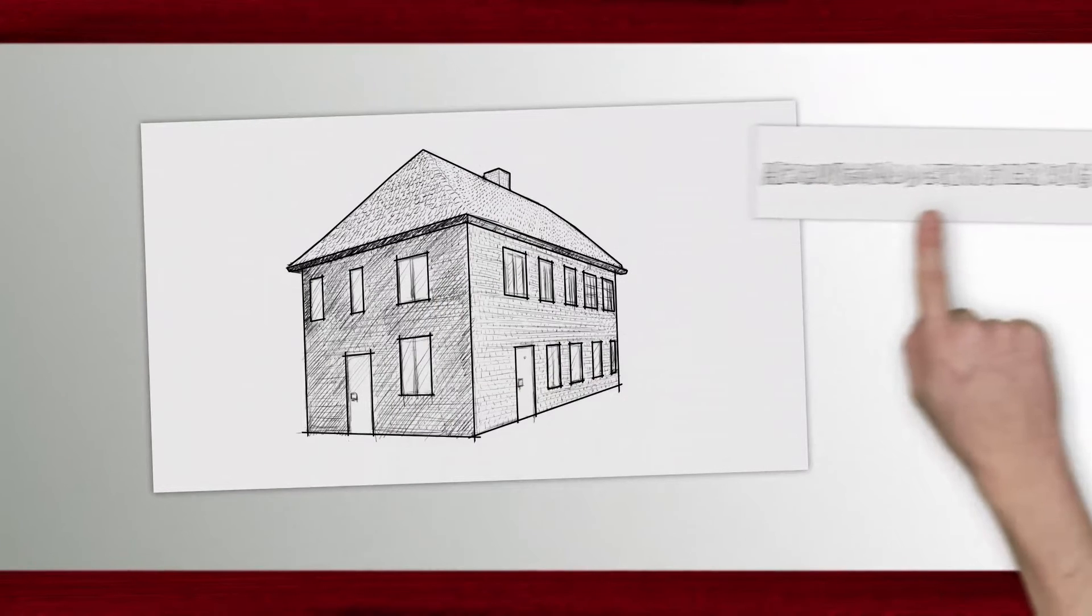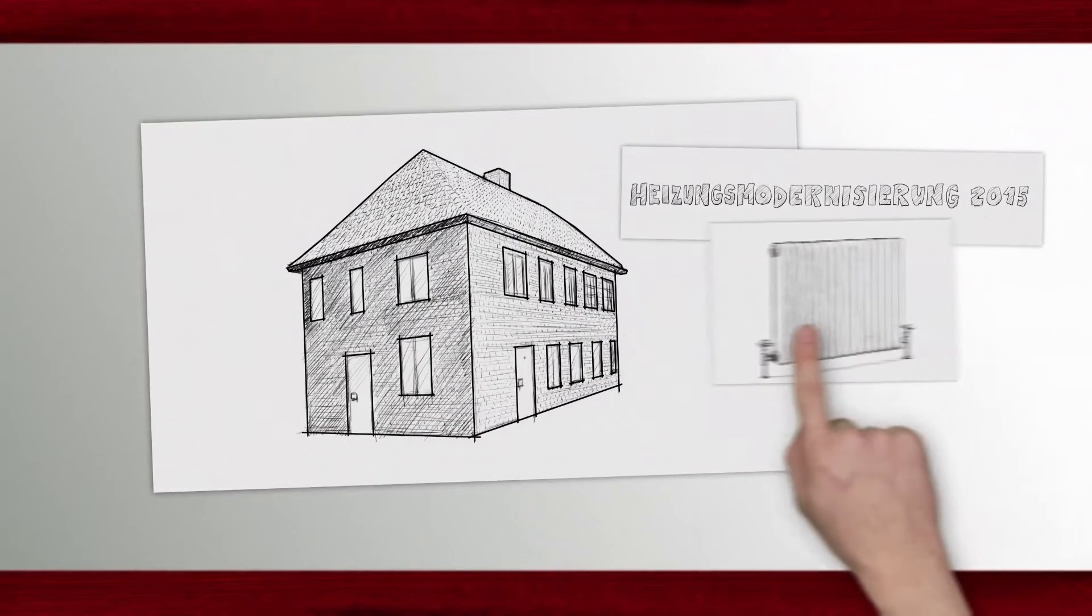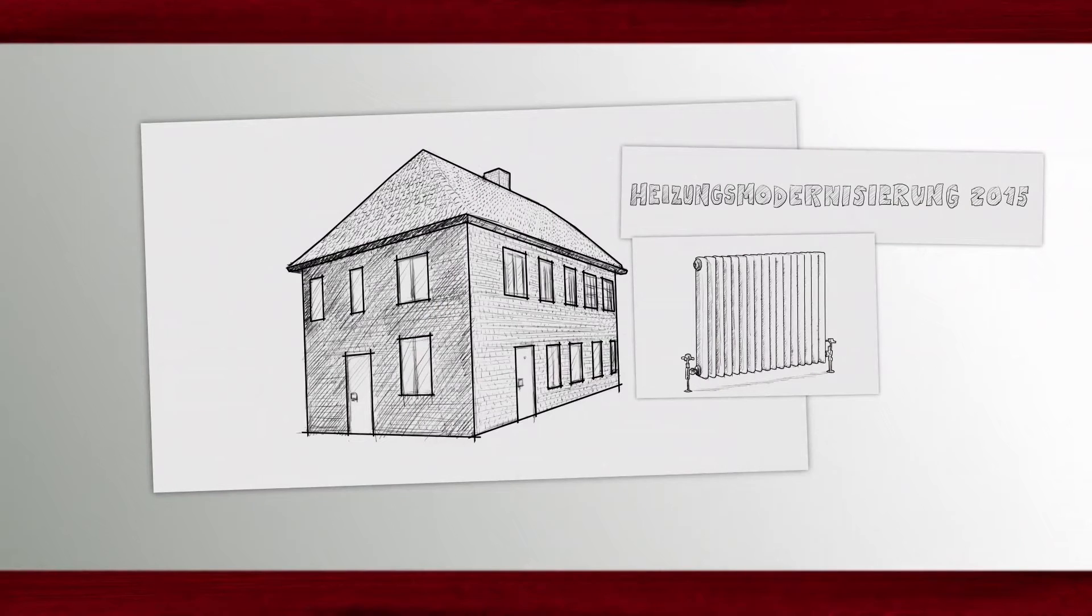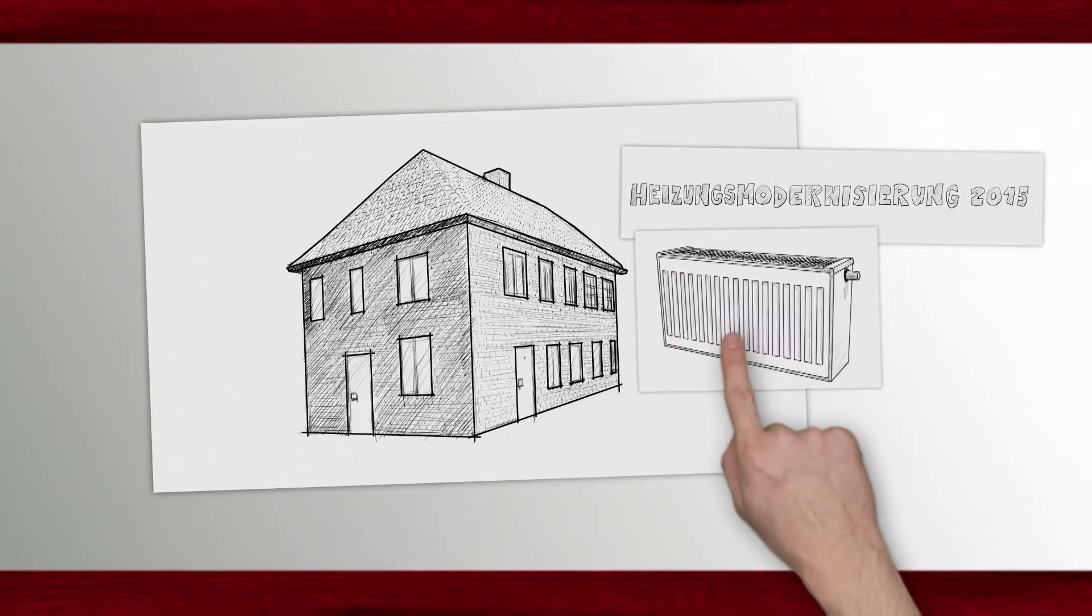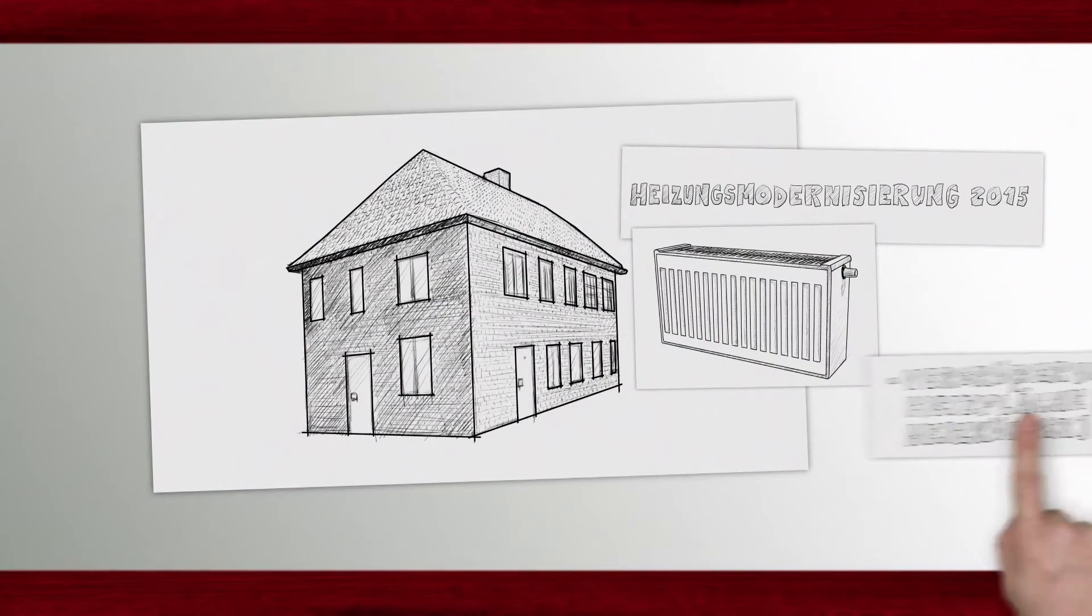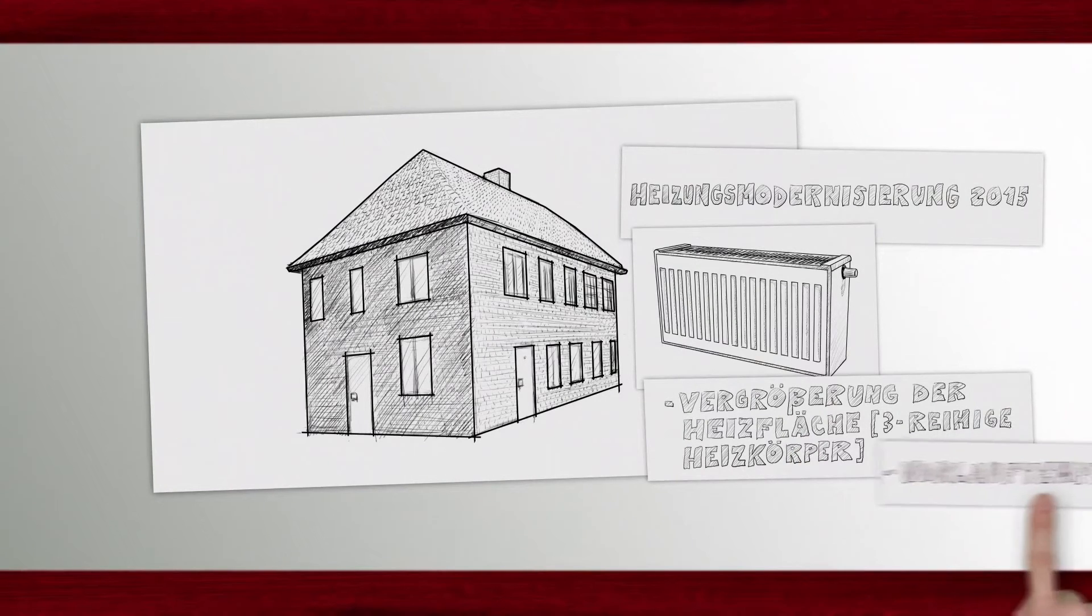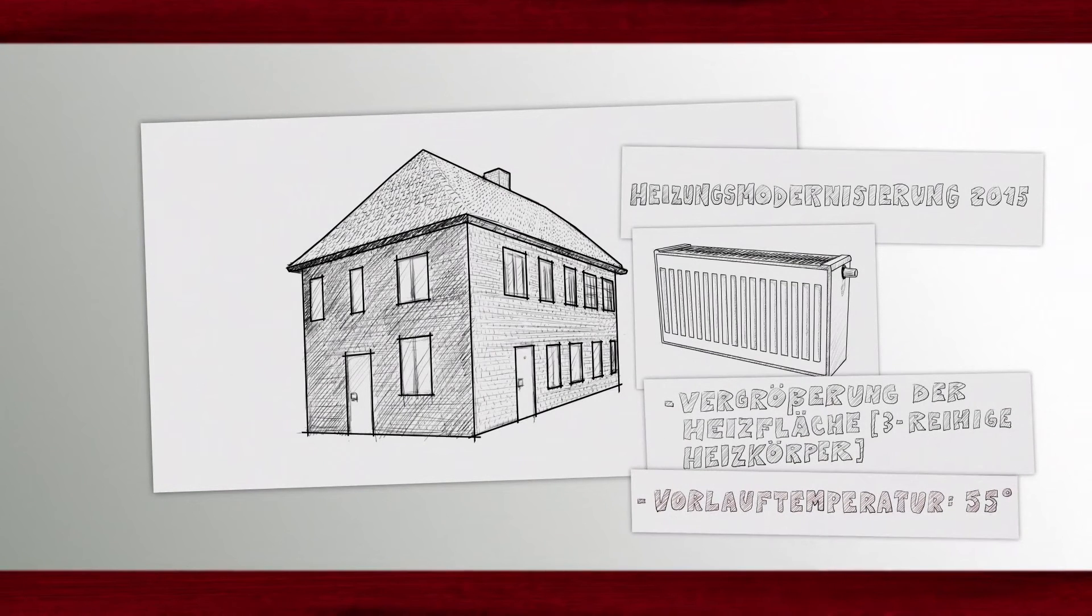Now let's assume that the house cannot be insulated. A new heater is required. Here it will be best to install a heat pump. This is simple and does not cost the earth. This achieves a flow temperature of 55 degrees.